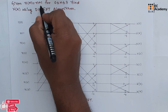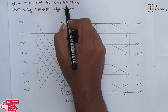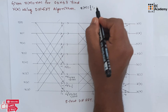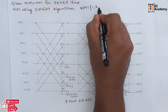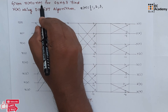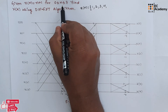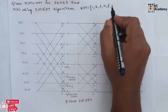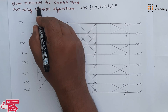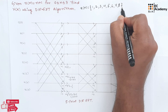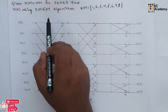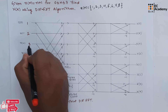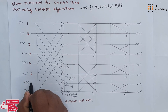Now, x of n is given as n plus 1, and n has values from 0 to 7. Let us write the sequence x of n. Putting n=0 gives 1; n=1 gives 2; n=2 gives 3; n=3 gives 4; n=4 gives 5; n=5 gives 6; n=6 gives 7; and n=7 gives 8. So the values for x(0) through x(7) are: 1, 2, 3, 4, 5, 6, 7, 8.